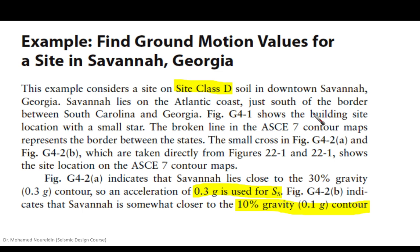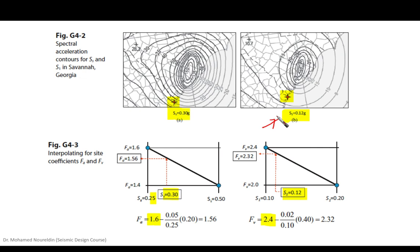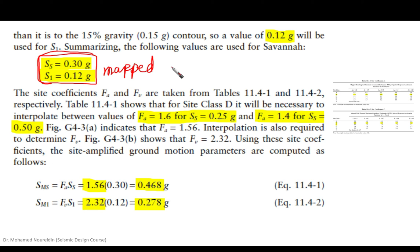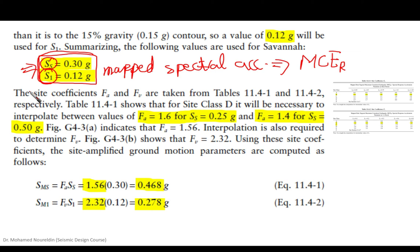From the maps, we obtain S sub S equal to 0.3G and S sub 1 equal to 0.12G. These are the mapped spectral accelerations, which represent risk-targeted maximum considered earthquake, MCER, based spectral accelerations. They are raw numbers and need to be modified to account for the effect of soil, as well as the inherent over-strength in the building itself.